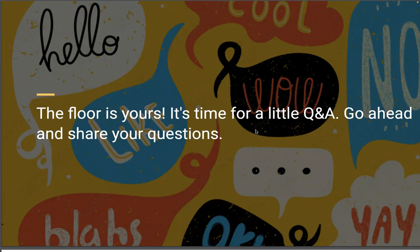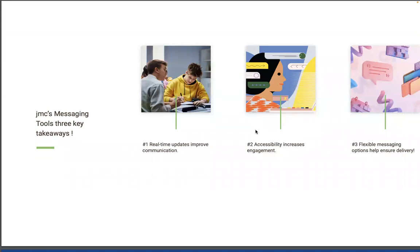This webinar is completely recorded. If you're new to our JMC webinars, please know that this entire presentation is being recorded and it will be delivered to you via email, so you can either download the presentation as a PDF or watch it. So JMC's messaging tools have three takeaways: number one, real-time updates improve communication; number two, accessibility increases engagement; and number three, flexible messaging options help ensure delivery. We're providing all three of these pieces to effectively communicate with your district and your community.